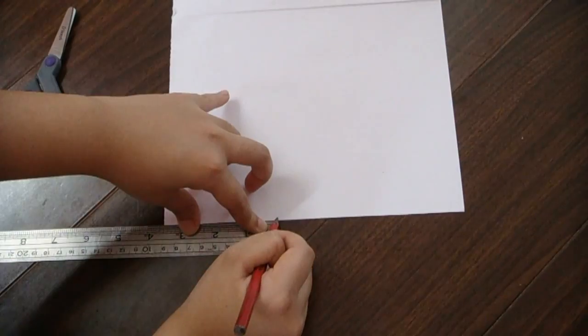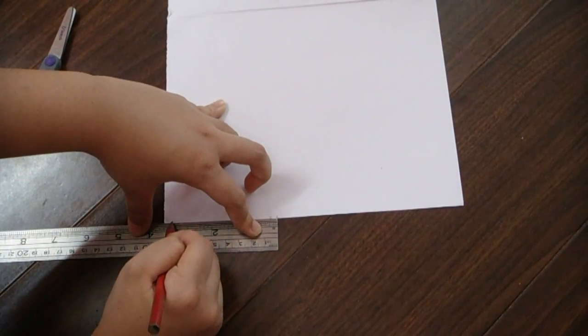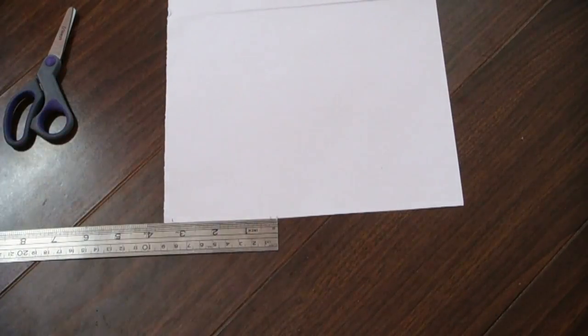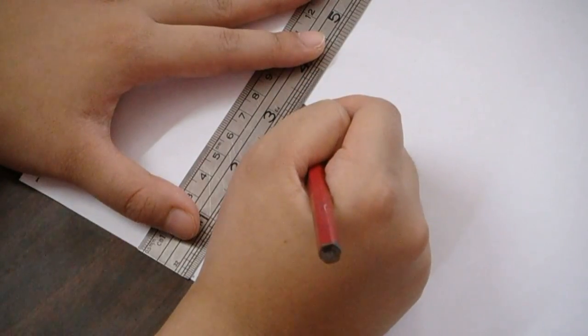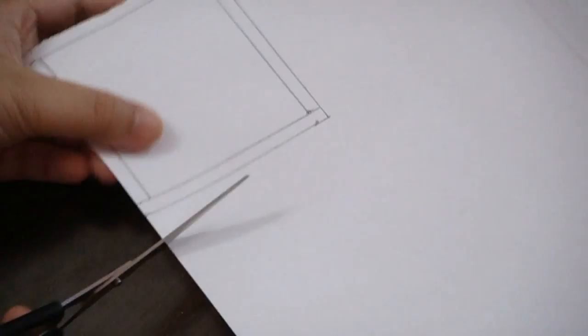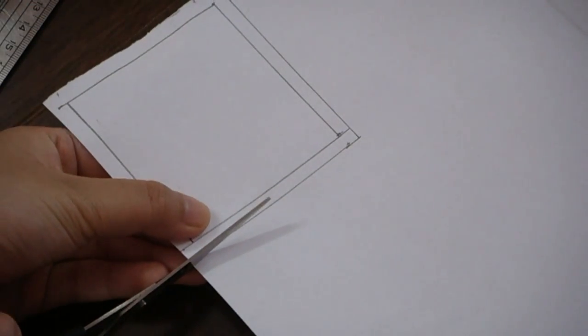I'm just using a ruler to mark that out on a piece of scrap paper. Just draw a three and a half inch square and mark a quarter inch in from each side to make a three inch square right in the center. So let's cut that out.